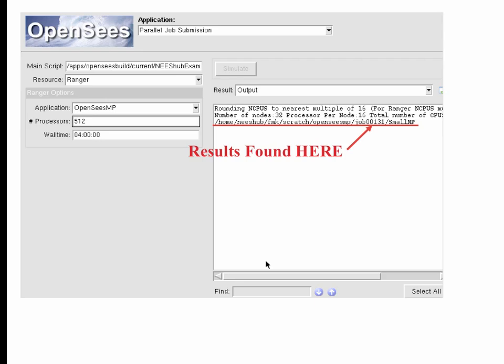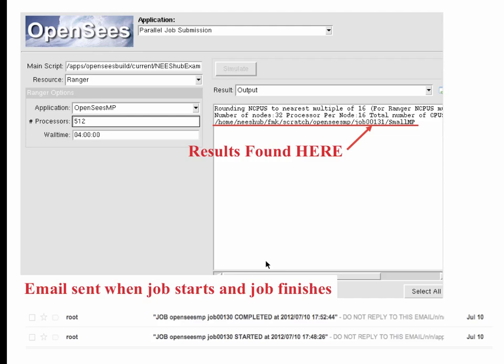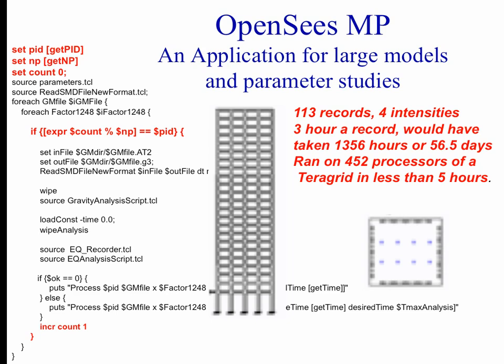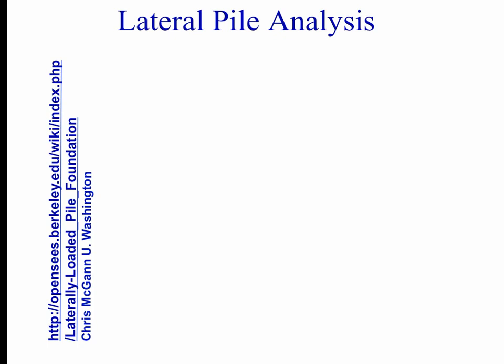The results will be in the scratch directory, which everyone is having problems creating right now. Here's a quick example of OpenSees SP — for large models. Typically you just have to change one command in the file to use a parallel solver, and the performance improvements can be significant. As Gomez was describing, something that used to take almost a year can be done in less than a month.